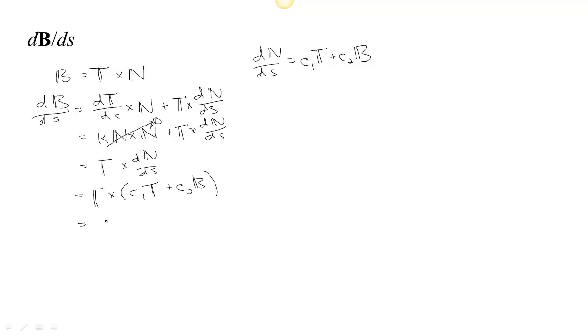This is just saying that dN/ds has to lie in the plane created by T and B, which is the rectifying plane. If we do the cross product, the cross product is distributive and scalars come through. So we get c1 T cross T plus c2 T cross B. Now T cross T, because those two vectors point in the same direction, those are zero.